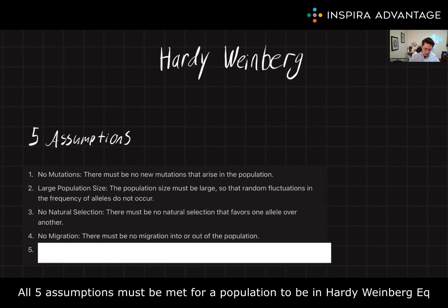Next up, we have no migration. The population can't be migrating in and out. We want to ensure that we start with the same allele pool and we end with the same allele pool.